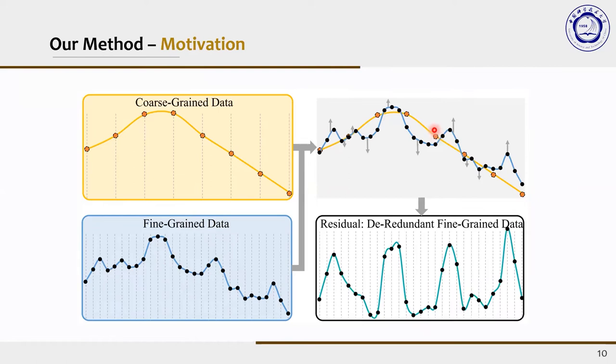Nevertheless, given the coarse-grained data, we can get the pure knowledge of the fine-grained data distribution and predict the possible fine-grained data given coarse-grained data. Then by calculating the residual between multi-grained data, the redundant information can be removed, and the unique fine-grained change patterns can be easily captured.